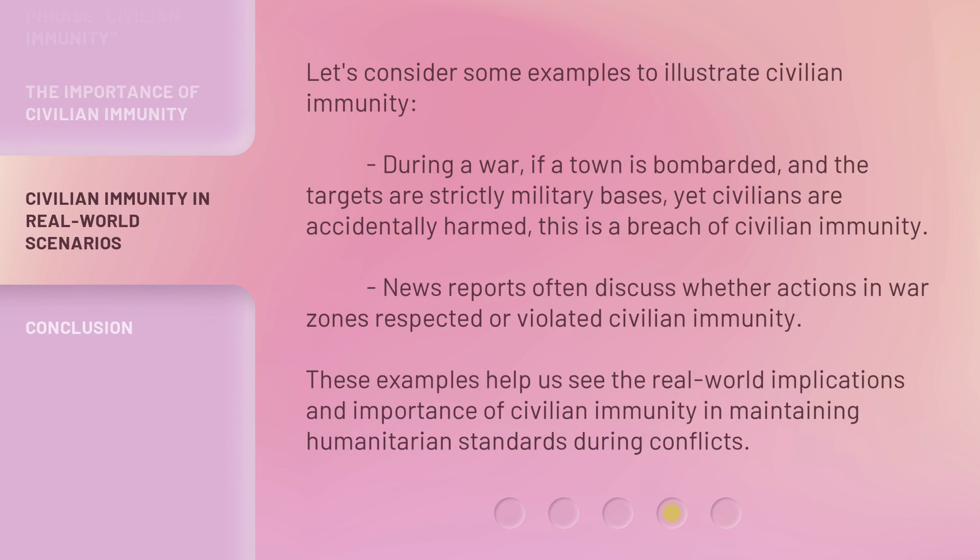Let's consider some examples to illustrate civilian immunity. During a war, if a town is bombarded and the targets are strictly military bases, yet civilians are accidentally harmed, this is a breach of civilian immunity. News reports often discuss whether actions in war zones respected or violated civilian immunity. These examples help us see the real-world implications and importance of civilian immunity in maintaining humanitarian standards during conflicts.